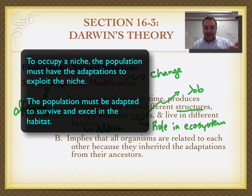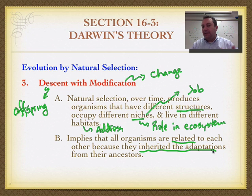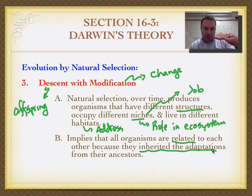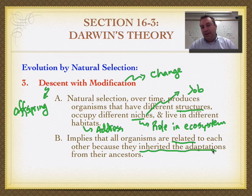The descent part implies that all organisms are related to each other because they've inherited their adaptations. The idea is that you can trace every single living thing through a family line all the way down to the very first prokaryotic cell that evolved. We'll cover the details of how that happened in another screencast and another series on evolution.